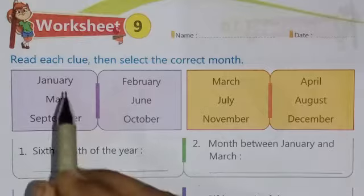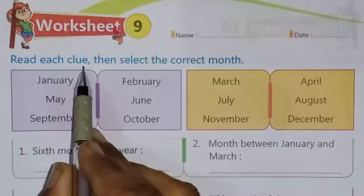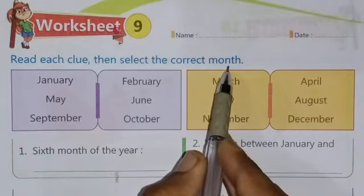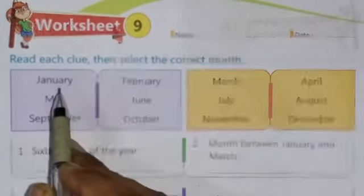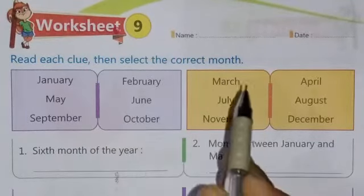The question is: read each clue, then select the correct month. Here are given the names of months.